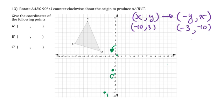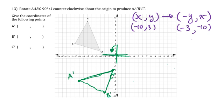For point A at (negative 7, 9): I go back 9 and down 7, landing at (negative 9, negative 7). So A prime is at (negative 9, negative 7). In summary: A prime is at (negative 9, negative 7), B prime is at (negative 3, negative 10), and C prime is at (negative 1, negative 4). Using patty paper — tracing the triangle, holding at the origin, and rotating 90 degrees — makes this easy to verify.